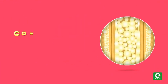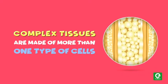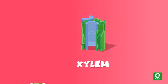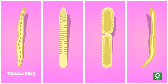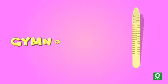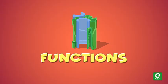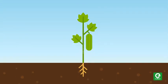Complex tissues are made of more than one type of cells. Xylem and phloem constitute the complex tissues in plants. In angiosperms, xylem is composed of four different types of elements: tracheids, vessels, xylem fibers, and xylem parenchyma. Xylem functions as a conducting tissue for water and minerals from roots to the stem and leaves.